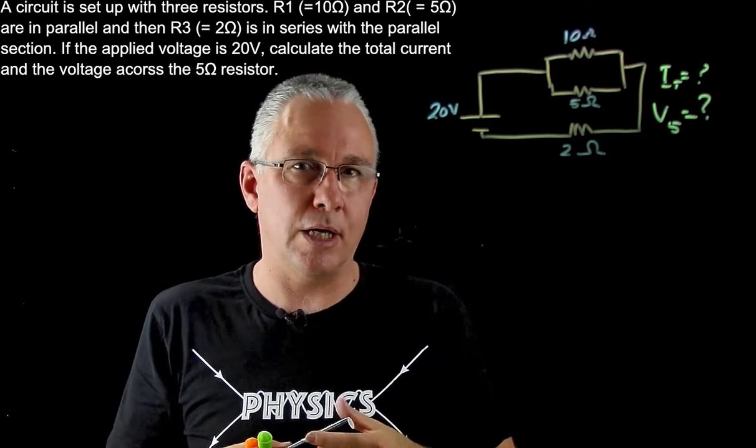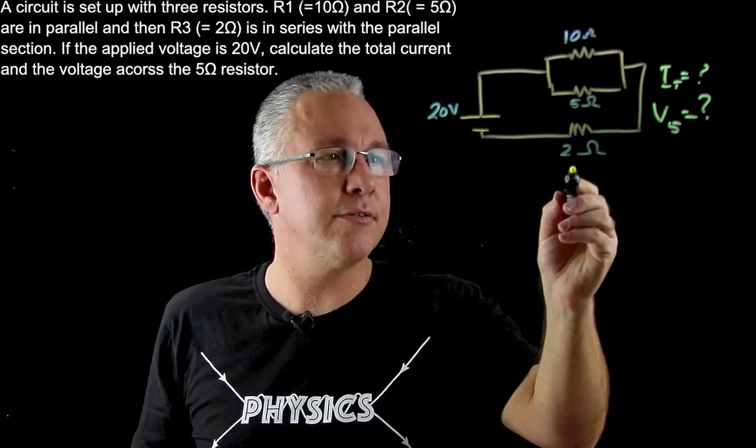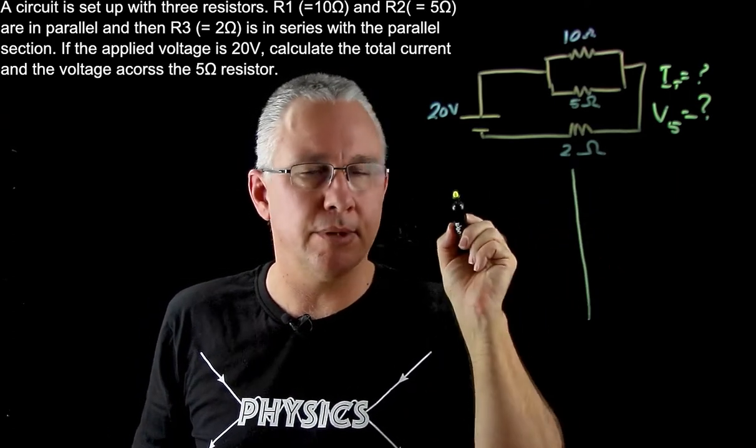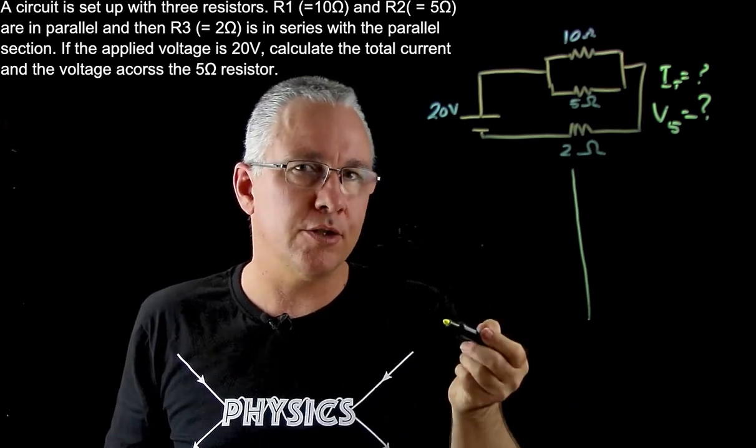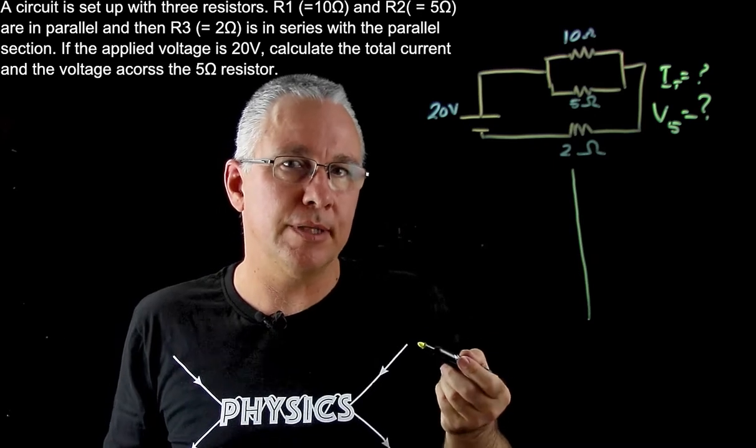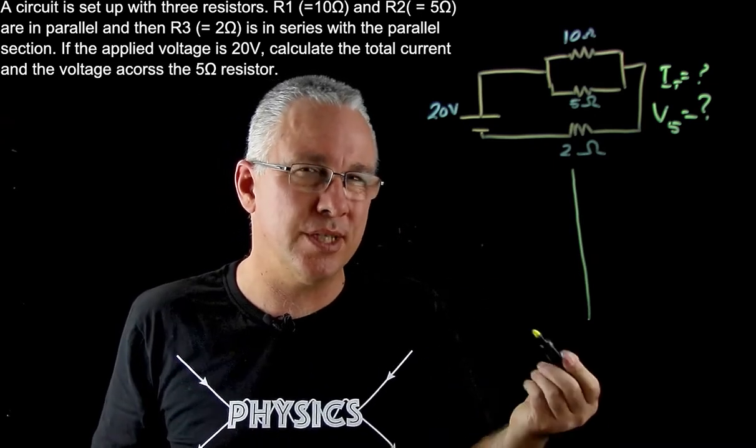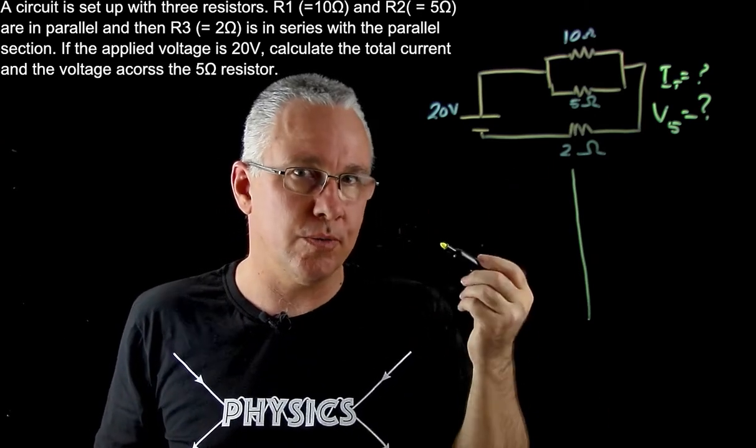Now let's start by looking at our current. I'm going to divide my paper into two parts - the total current on this side and the voltage on the other side. To work out the total current, it's simply the total voltage divided by the total resistance. Let's work out the total resistance.